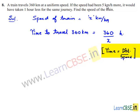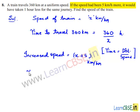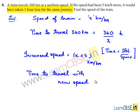Now, if the speed of the train had been 5 km per hour more, it would have taken 1 hour less for the same journey. The increased speed is x plus 5 km per hour. Since the distance is the same, the time taken with the new speed is 360 divided by x plus 5.